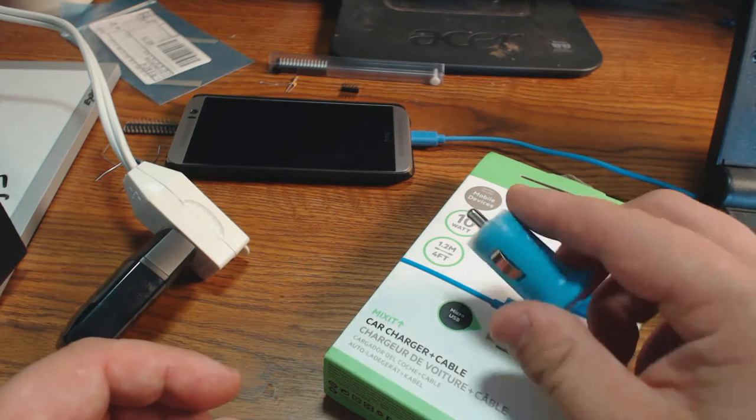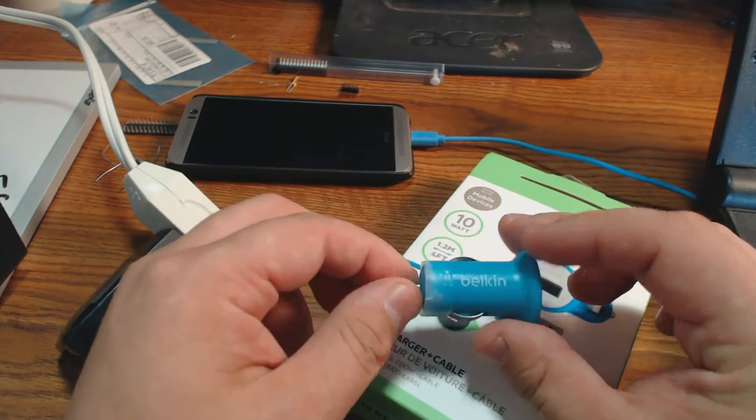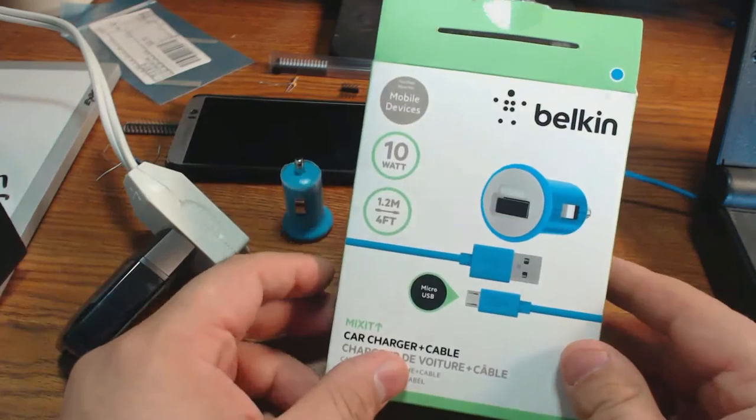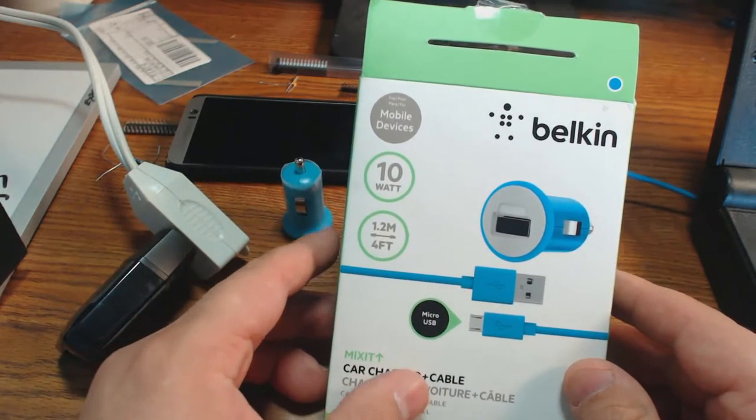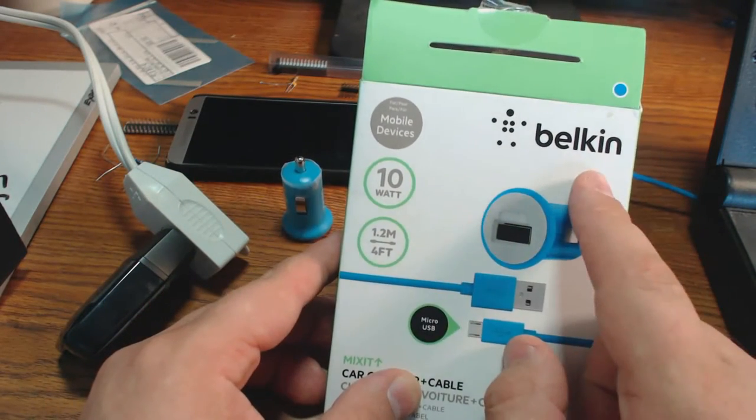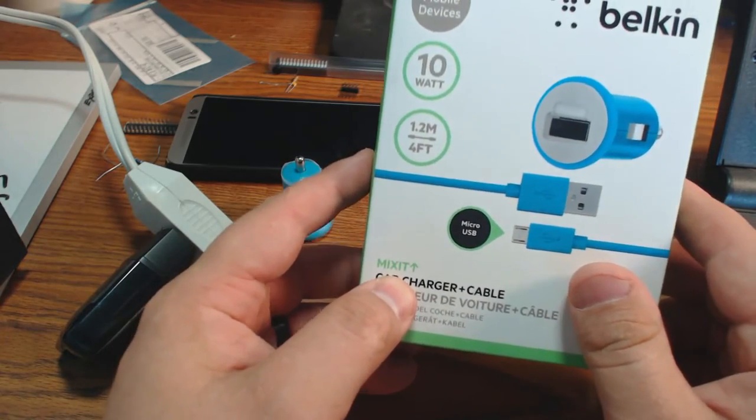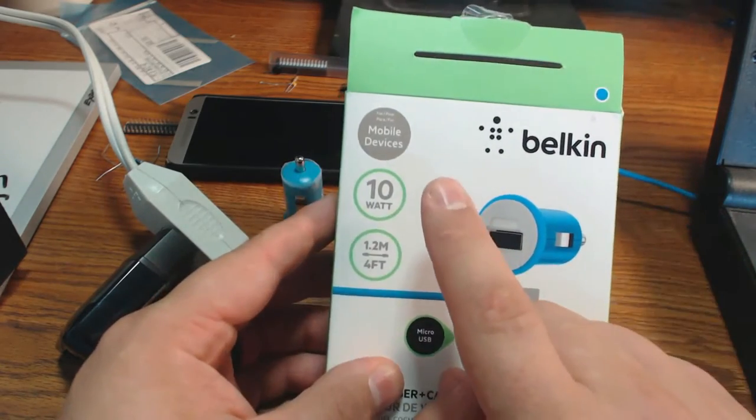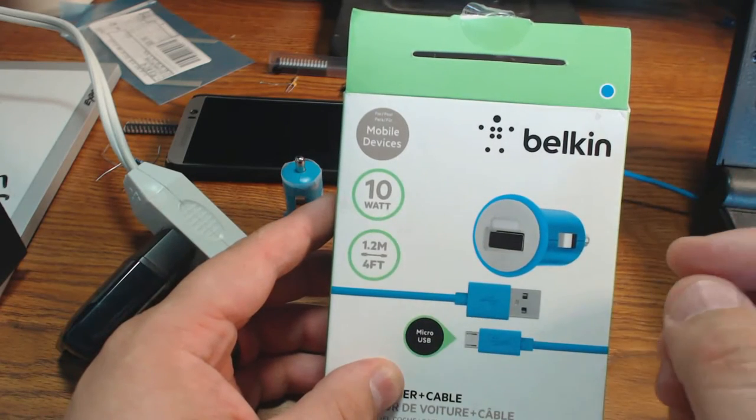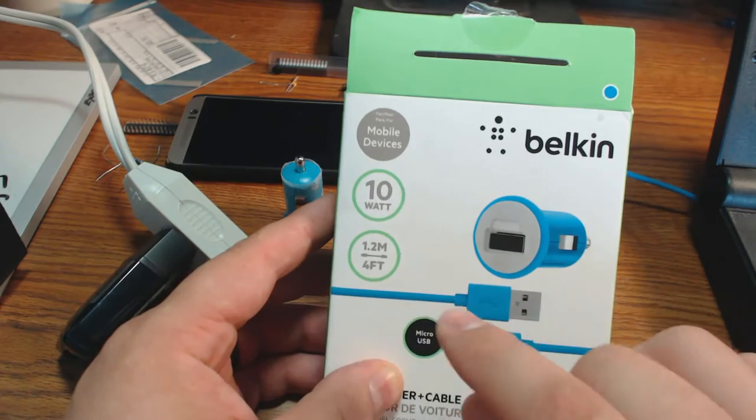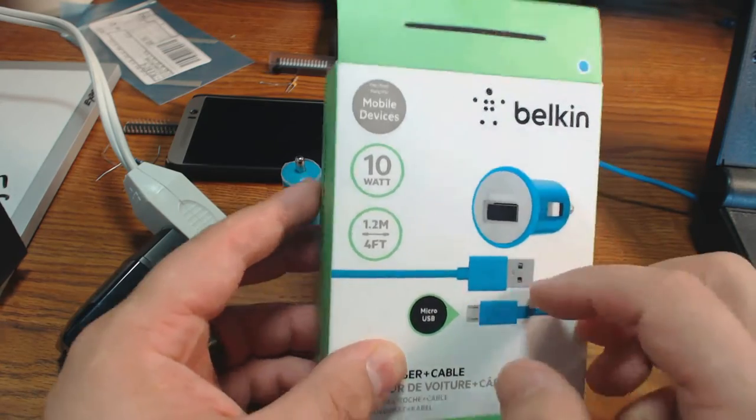So this guy right here is the offending charger, and this is the box for it. As you will note, it's a Belkin. This is a Mixit charger, and it's rated for 10 watts, which is a very random number, because is it 10 watts on the 12-volt side or 10 watts on the 5-volt side?